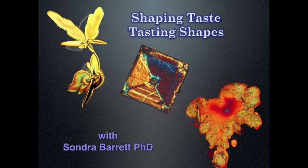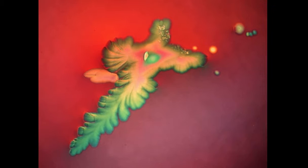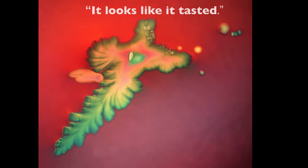This first slide shows different shapes through the microscope. A couple of them are wine and one is a chemical of taste. This image changed my life. I had no intention of ever getting into the world of wine. When I showed it to the winemaker, he said it looks like it tasted. How can a picture look like a taste?